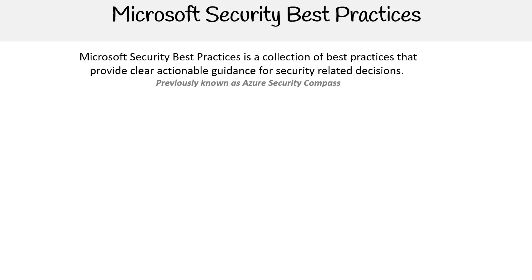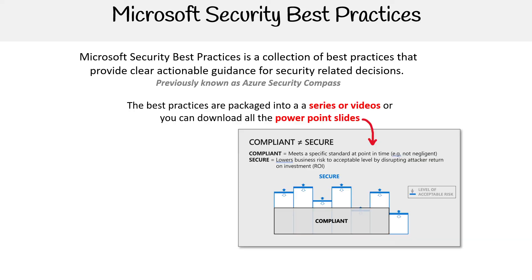The Microsoft Security Best Practices is a collection of best practices that provide clear, actionable guidance for security-related decisions. This was previously known as the Azure Security Compass. The best practices are packaged into a series of videos, or you can download the PowerPoint slides.